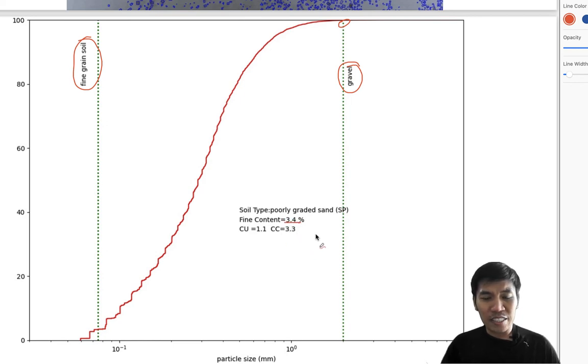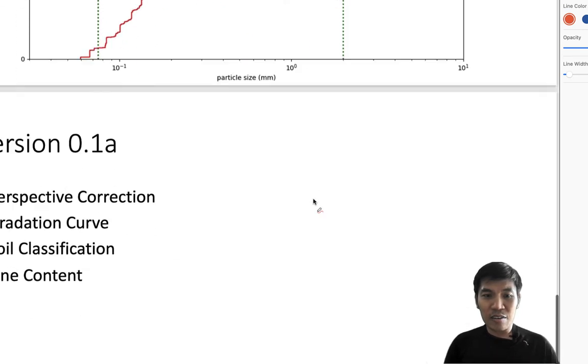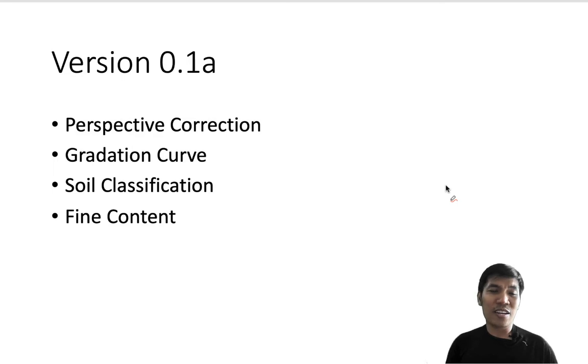The program shows we have about 34 percent fines, Cu equal to 1.1, Cc equal to 3.3. We also classify the soil as SP, which is poorly graded sand. If you're in the field, you place the soil on paper, use a mobile phone to take a picture, and you can get the gradation curve immediately. Right now I've developed this program for a while, but it's not complete.